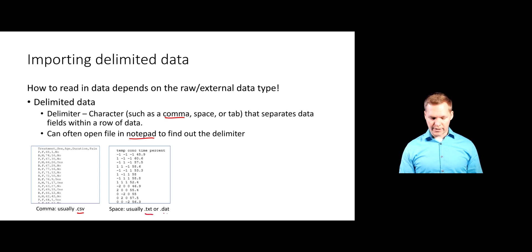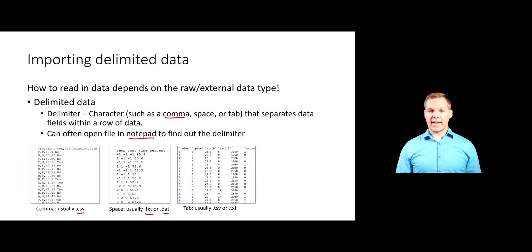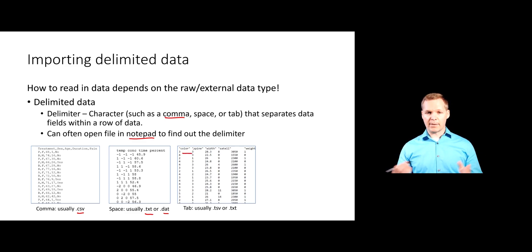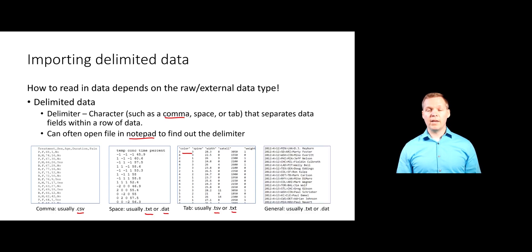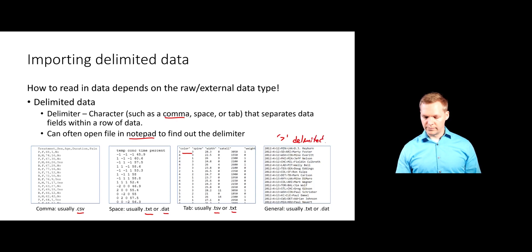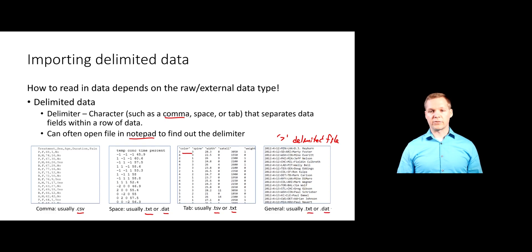A space-delimited file is often called a .txt or .dat file. Another common delimiter is a tab — you can see a set number of spaces that is actually a tab separating the values. Tab-delimited files are usually saved as .txt or .tsv for tab separated value. You can also have any character as your delimiter — for example, a greater-than sign. General delimited files don't have a common extension but are usually seen as .txt or .dat.